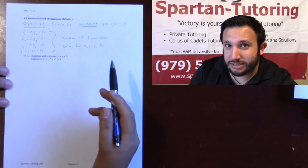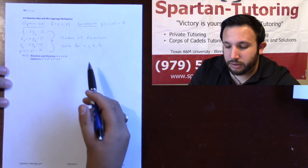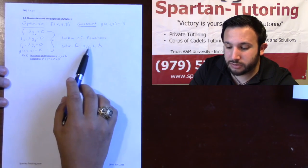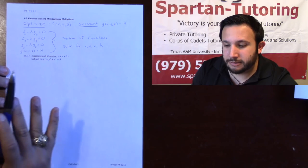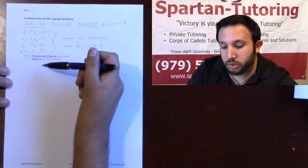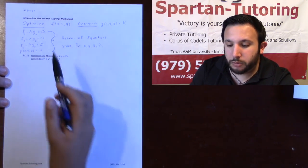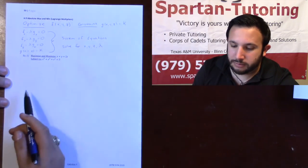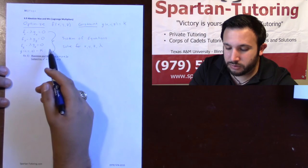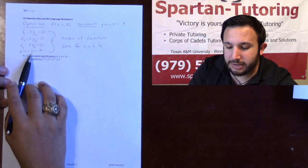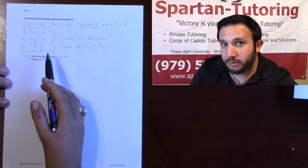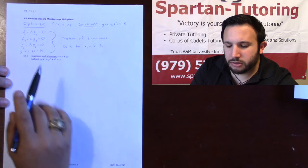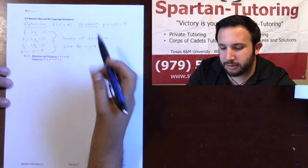Really this is an algebra problem. After you set this up there's no more calculus — you need to do algebra to solve for x, y, z, and lambda. Ideally, you want to put x in terms of lambda, y in terms of lambda, z in terms of lambda, and plug that into the constraint to solve for lambda. Because once you solve for lambda, you can solve for x, y, and z. Let's go ahead and do an example.